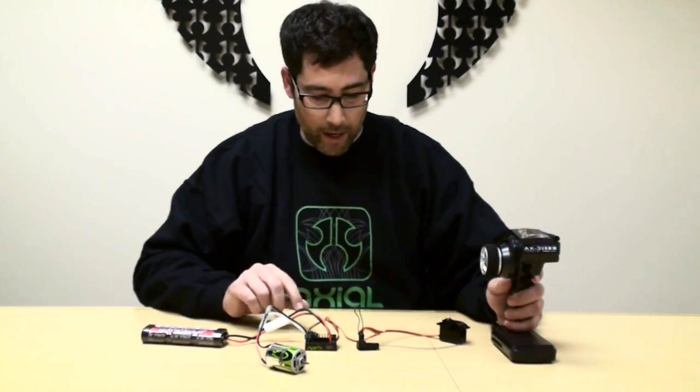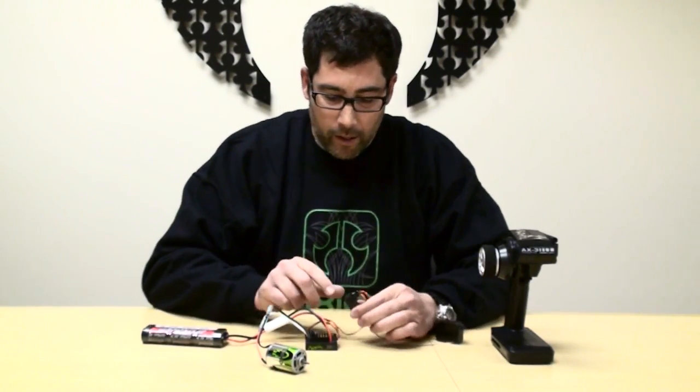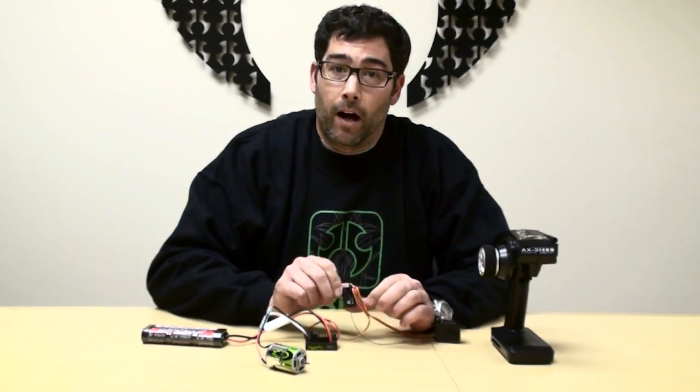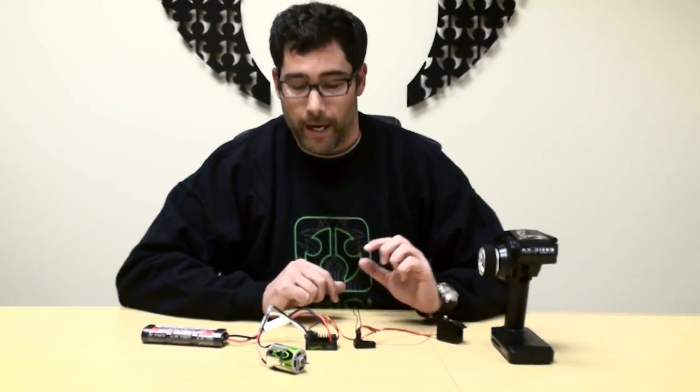So we've got the bind plug in the number three port. We're going to power up the ESC. You'll see a blinking red light on the receiver, and that tells you it's waiting for a signal from the transmitter.